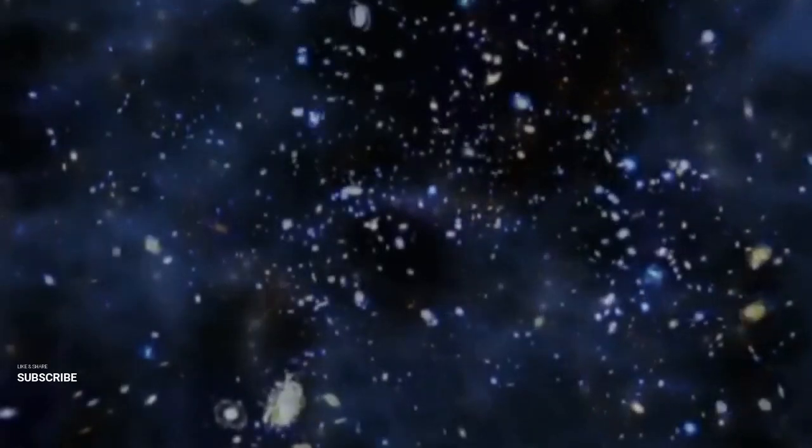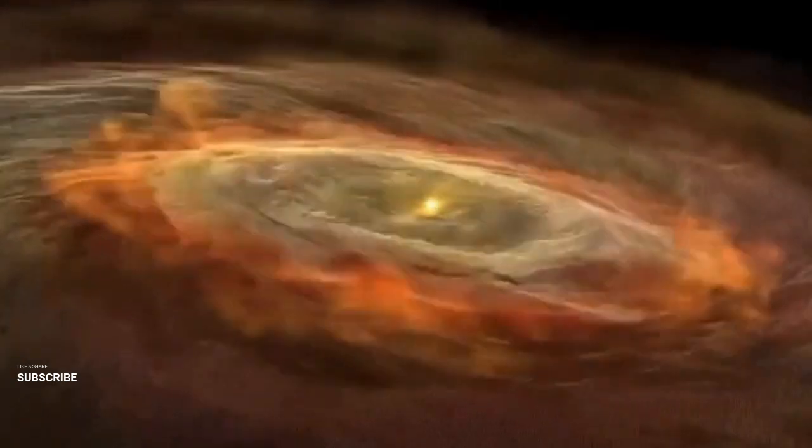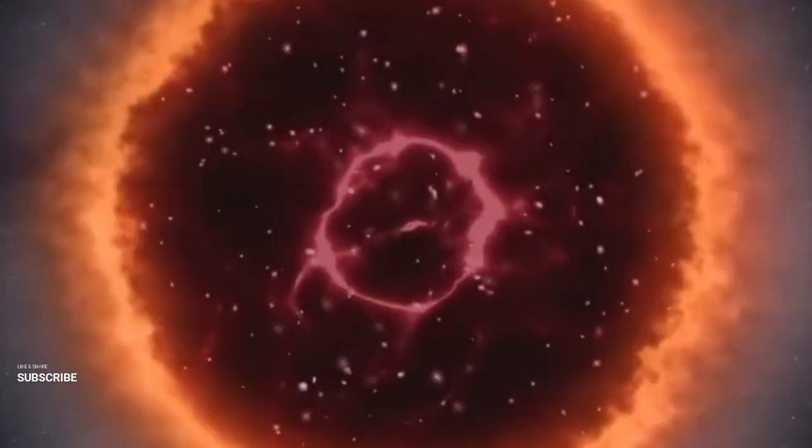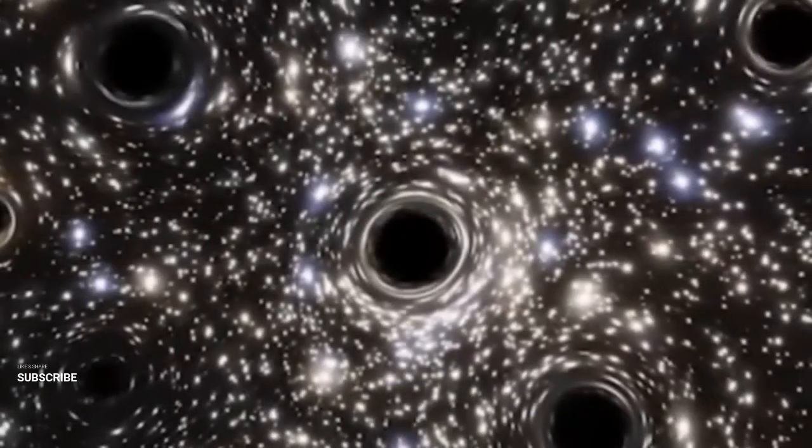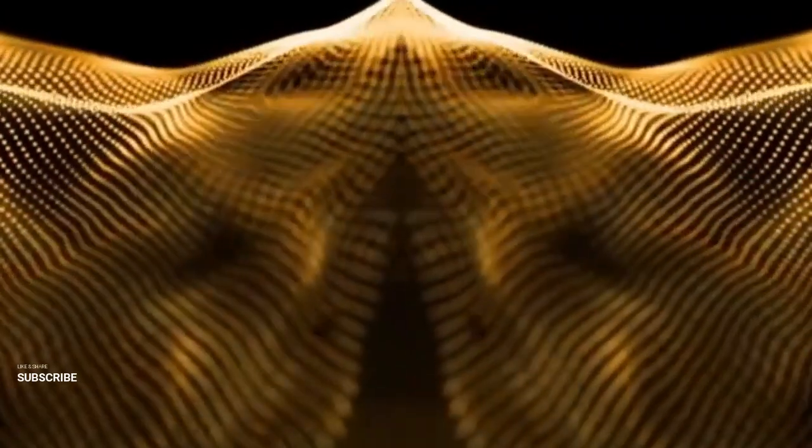Dark matter and dark energy are two of the most mysterious components of the universe, making up about 95% of its total mass-energy content. This segment explores how the James Webb Space Telescope's observations could shed light on these enigmatic forces. By analyzing the distribution of galaxies and the bending of light, scientists hope to gain insights into how dark matter structures the cosmos and how dark energy drives its accelerated expansion.